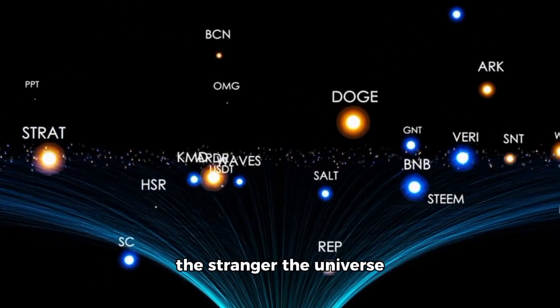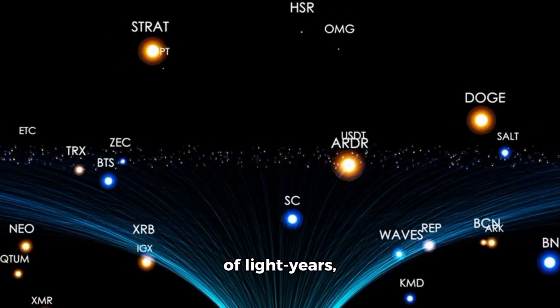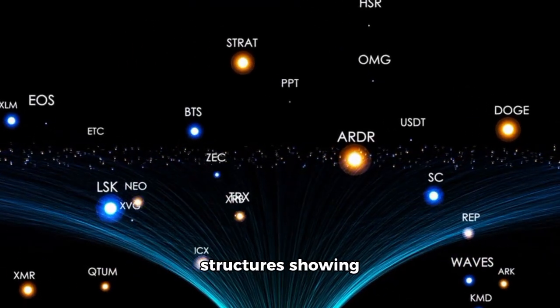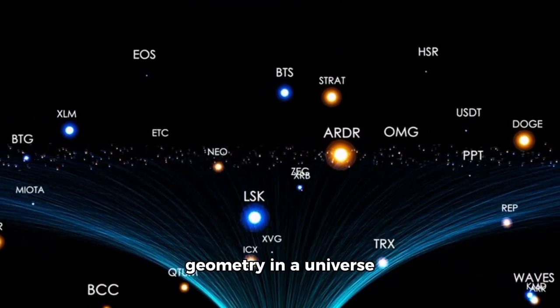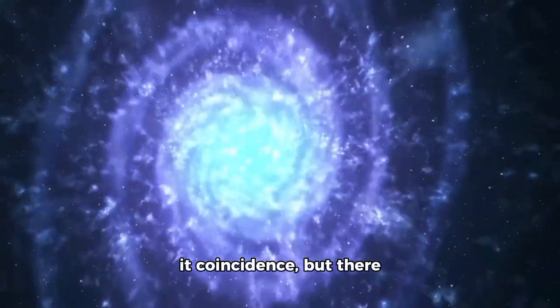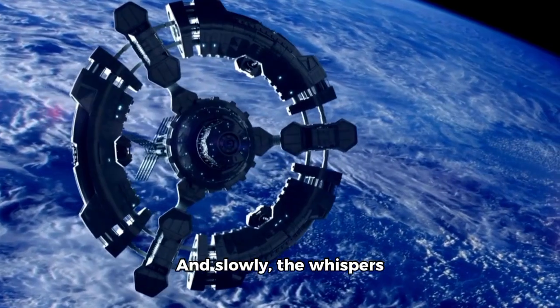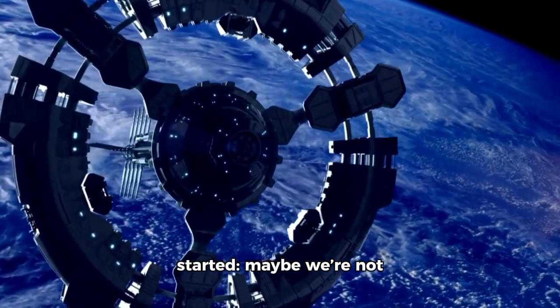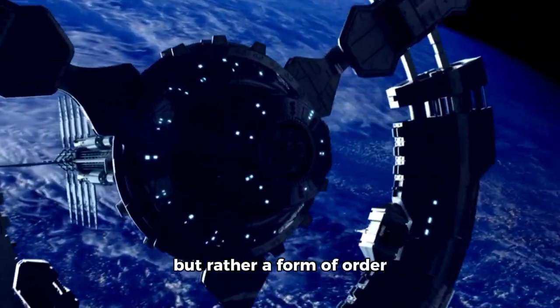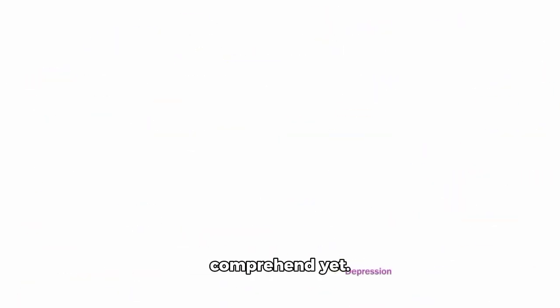The farther Webb looked, the stranger the universe became—patterns repeating across billions of light-years, structures showing geometry in a universe that was supposed to be random. Scientists tried to call it coincidence, but there were too many, too frequent, too flawless. And slowly, the whispers started. Maybe we're not seeing randomness at all, but rather a form of order that we simply do not comprehend yet.